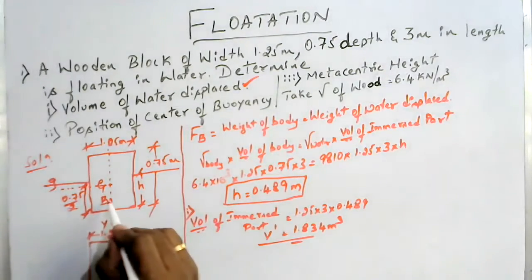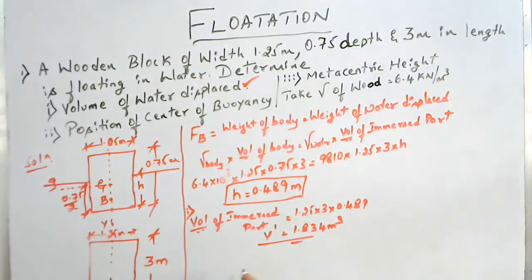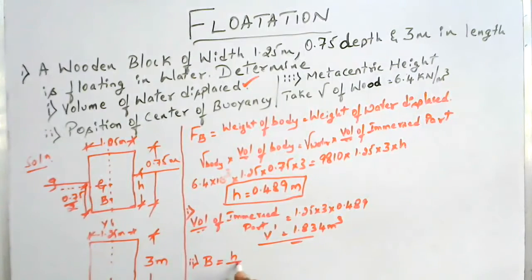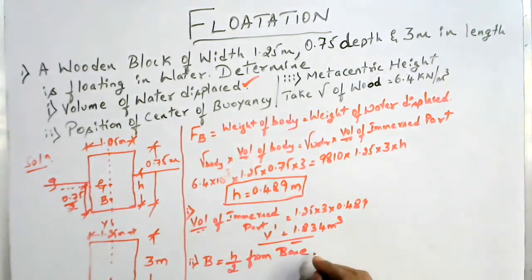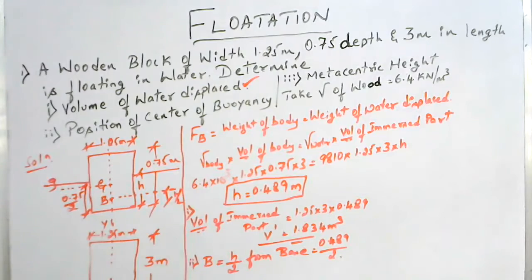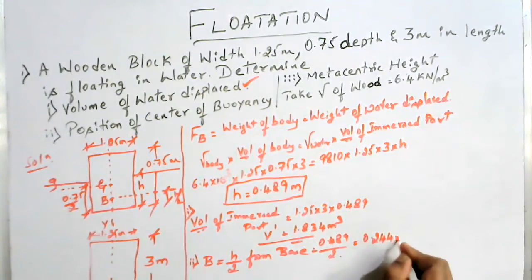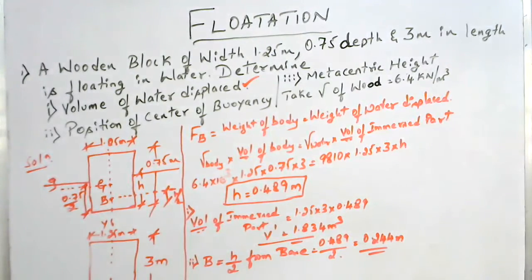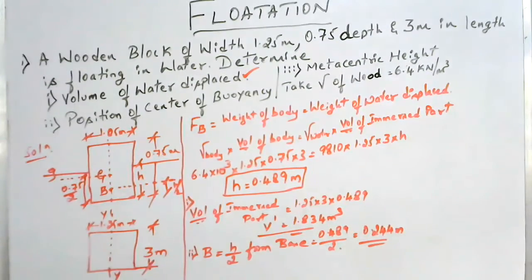Next he has asked for the position of center of buoyancy. Look at the sketch — the position of center of buoyancy B is at a distance of h by 2 from the base, which equals 0.489 divided by 2. This works out to be 0.244 meter from the base of the body.